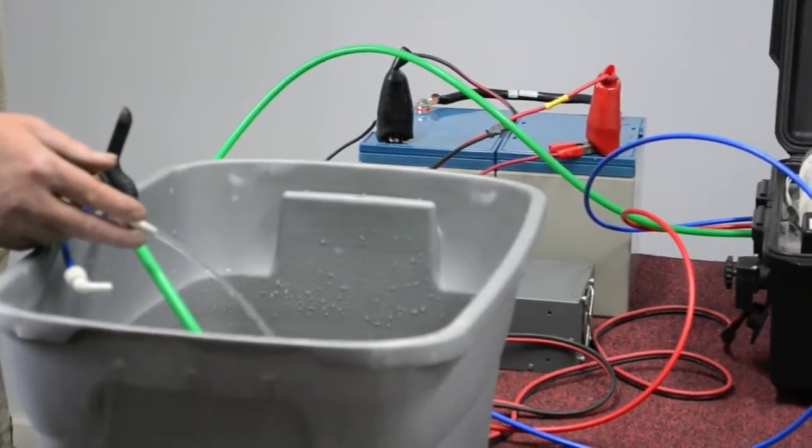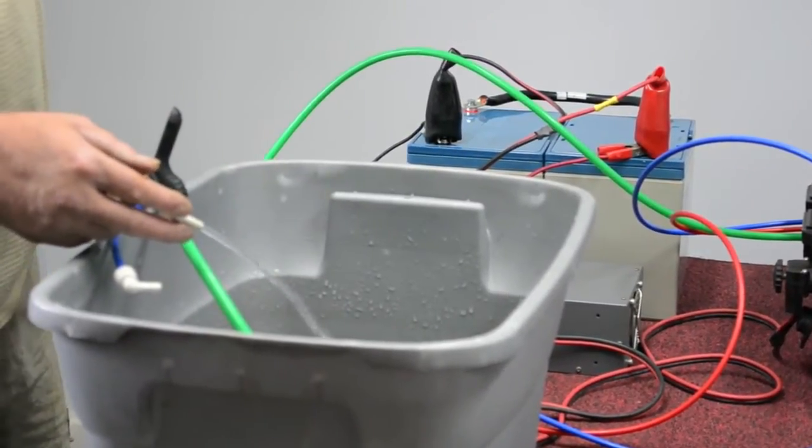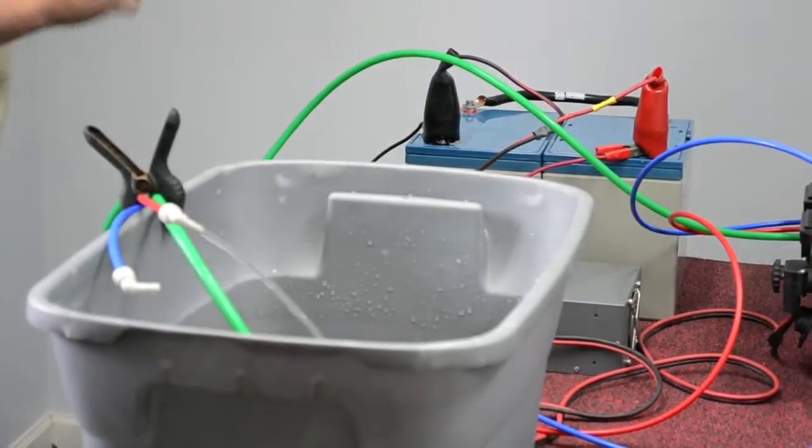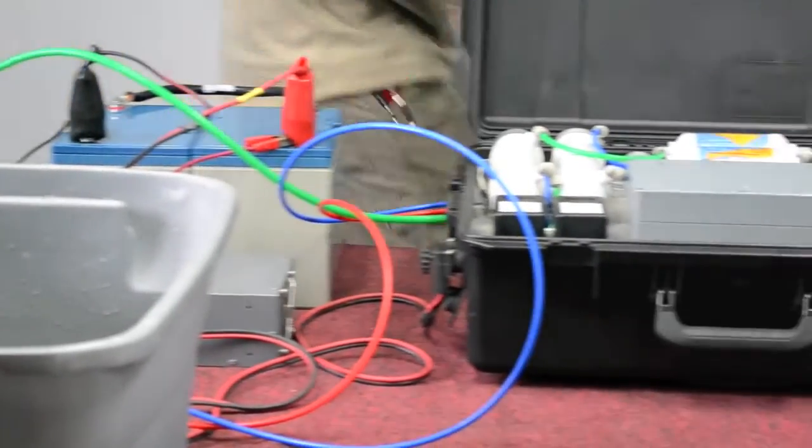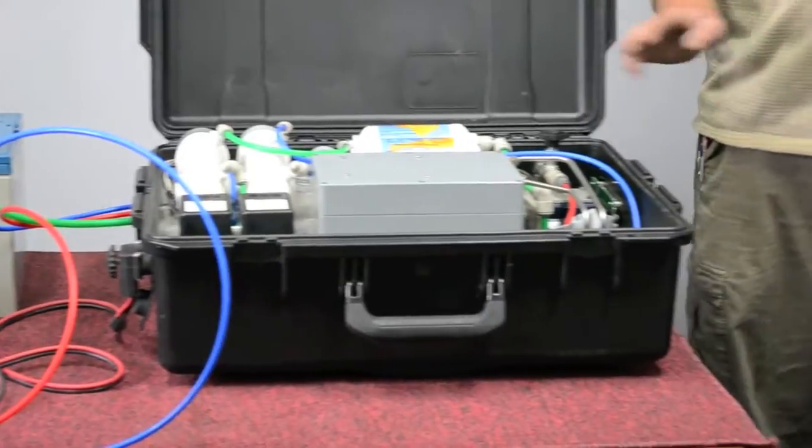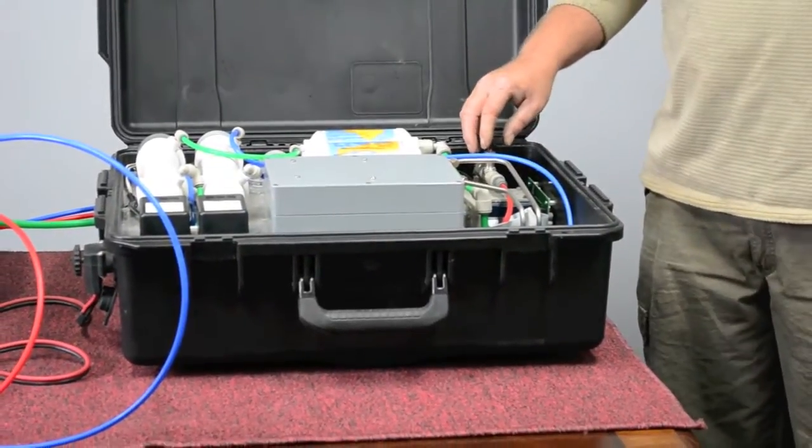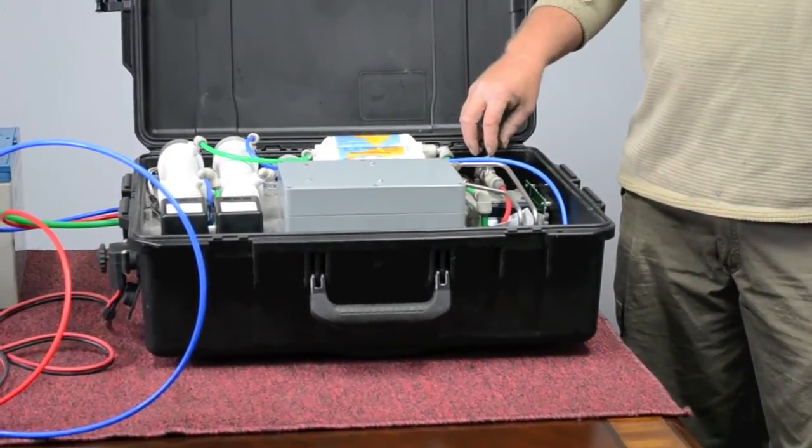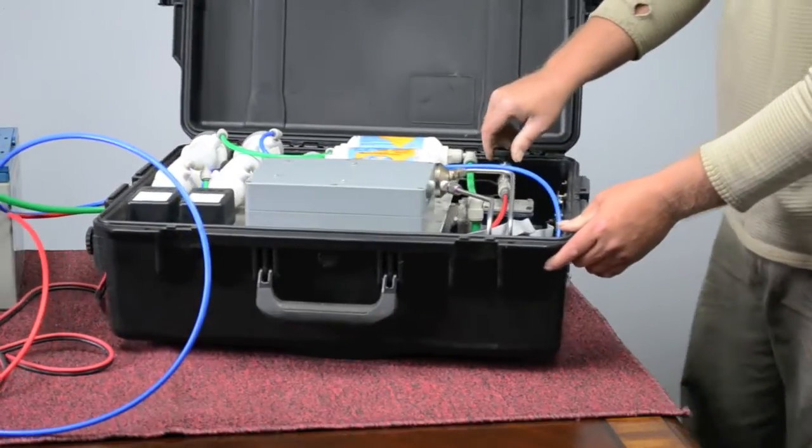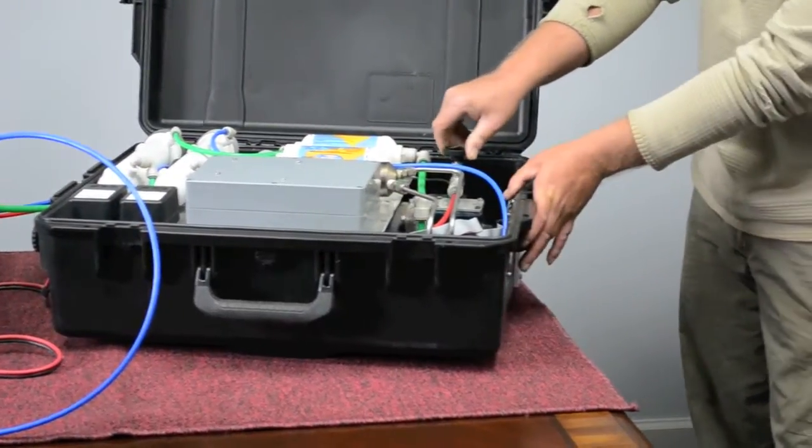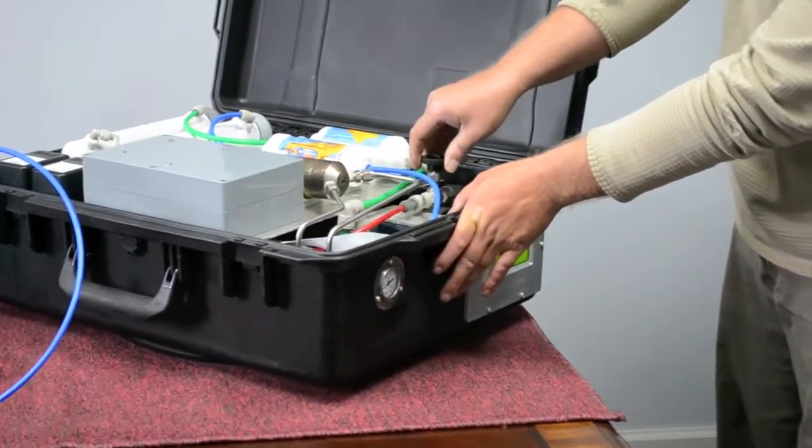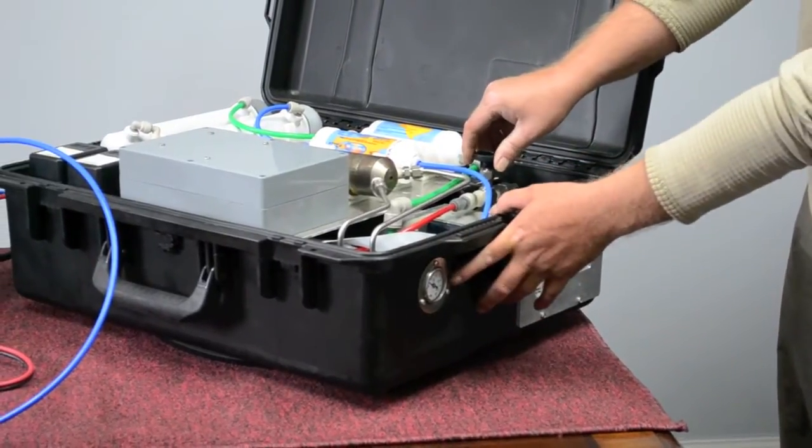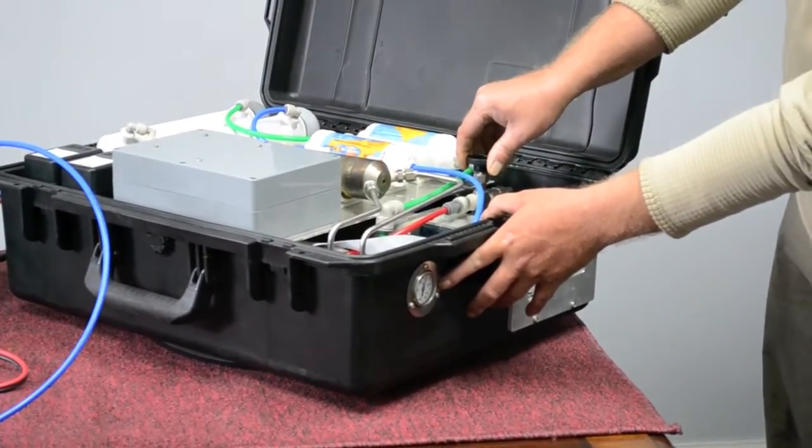With a good steady flow on the concentrate side, I can begin to add pressure to the unit. To add pressure to the unit, adjust the needle valve clockwise. Monitor the pressure on the gauge. It will run about 800 psi.